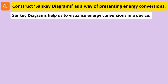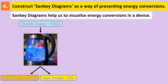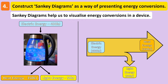We can use Sankey diagrams to present energy conversions that take place in a particular device, such as an electric kettle. If 400 kJ of electrical energy enters this kettle and is converted into 350 kJ of heat energy and 50 kJ of light energy, we can draw a Sankey diagram to represent this conversion. The base arrow is the thickest part, representing the total 400 kJ entering the kettle. The two output arrows represent heat and light energy, with the heat energy arrow being thicker since 350 kJ emerges versus only 50 kJ of light. Combining the output energies equals the input, proving no energy has been created or destroyed.